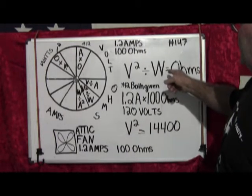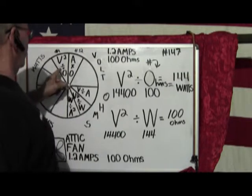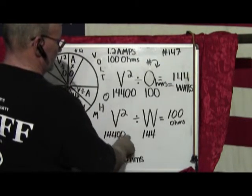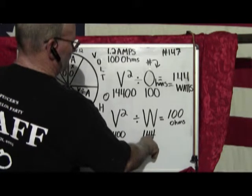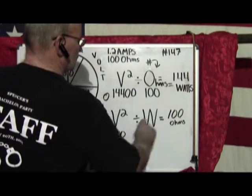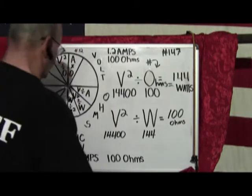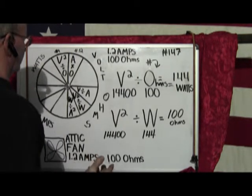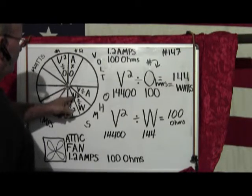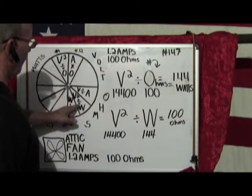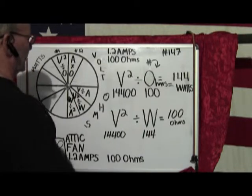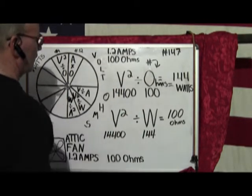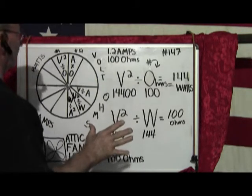We're going to move on to watts. We use V squared, 14,400 volts, divided by 144 watts, equals 100 ohms. So once again we prove the validity of voltage squared divided by watts is equal to ohms. Because you plug all this stuff in, it comes out to 100 ohms no matter how you look at it.